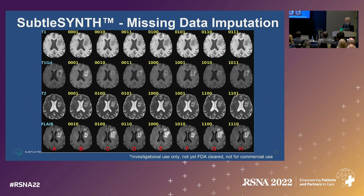To break down this plot: going down the leftmost column, there's a T1 image, a T1 post-contrast image, a T2 image, and a FLAIR image — these are the images acquired by the scanner itself. Each row going across shows that contrast being synthesized from a subset of images that does not include that particular contrast.